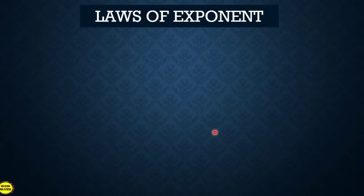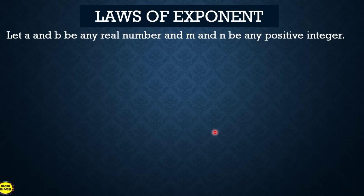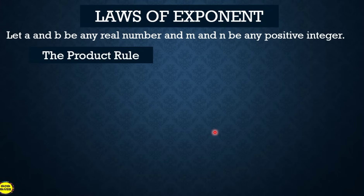Before we start, let's recall the laws of exponents. Let a and b be any real number and m and n be any positive integer. First is the product rule: if we have a raised to m times a raised to n, we add the exponents, so the answer is a raised to m plus n.